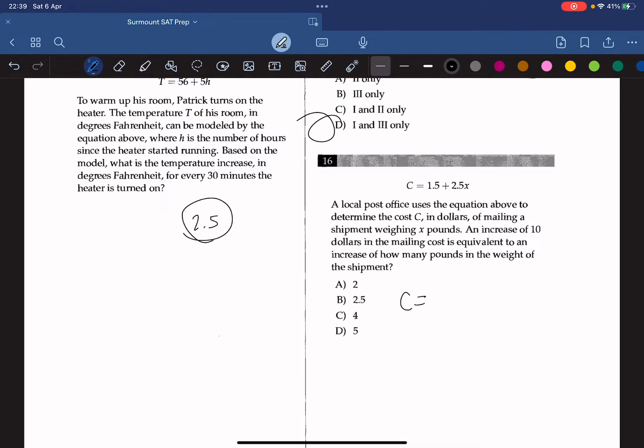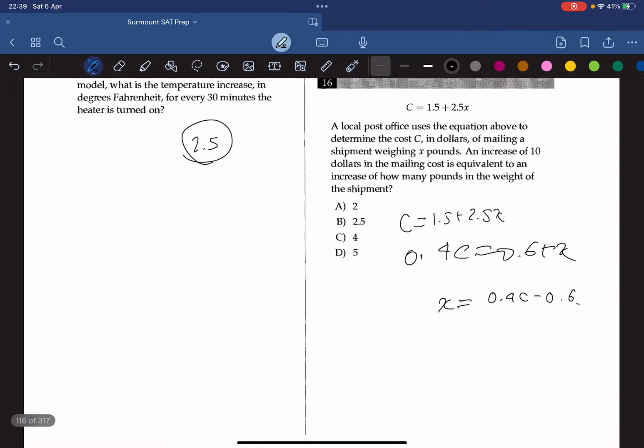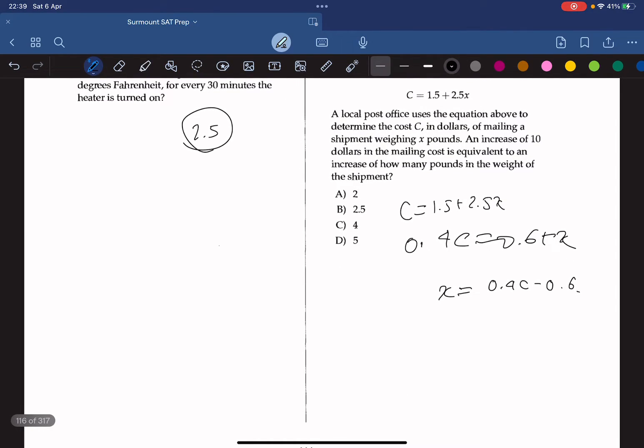So c equals 1.5 plus 2.5x. Now what we can do here is we can divide each element by 2.5, then we get 0.4c equals 0.6 plus x. So x equals 0.4c minus 0.6. And here we can see that the slope here is 0.4. So this means that the weight of the shipment increased by 0.4 pounds per dollar. So a $10 increase in the mailing cost should result in a four pound increase in the weight of the shipment. So the answer is C.